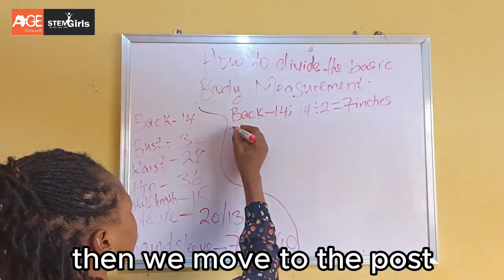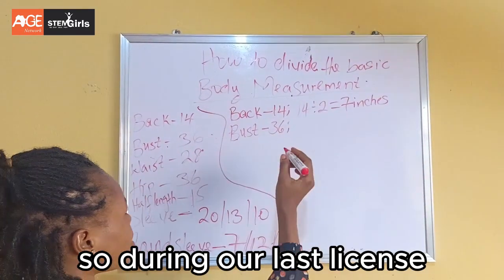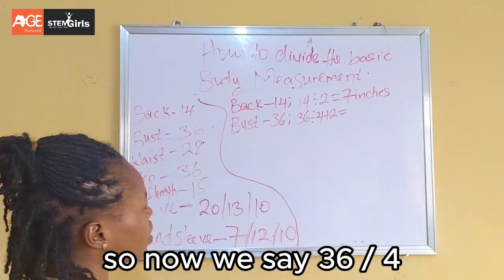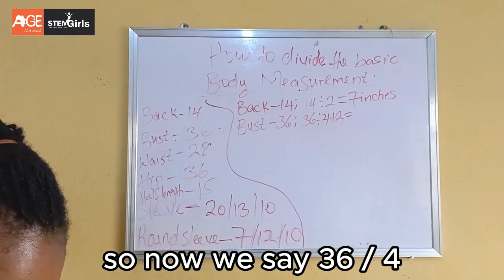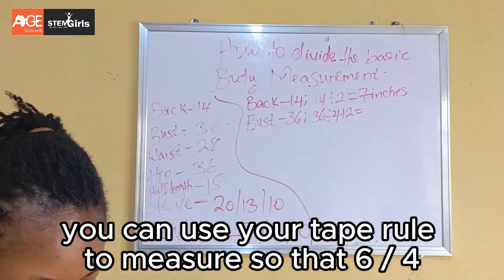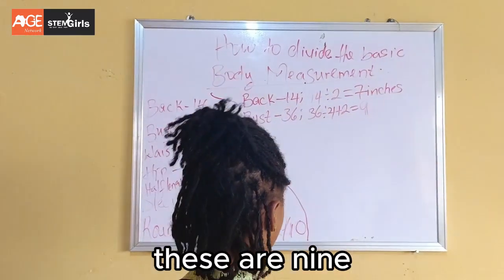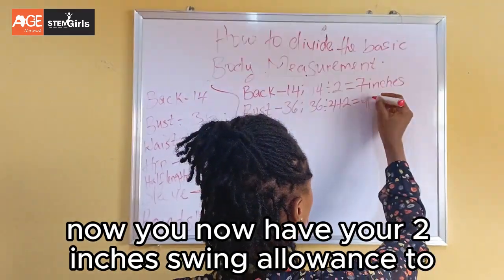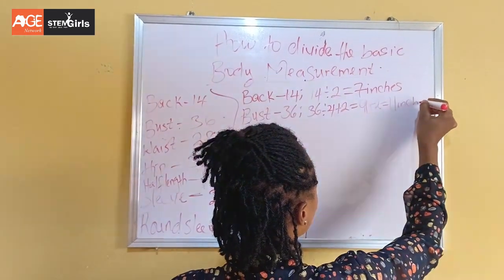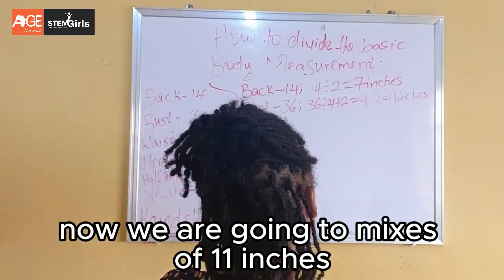Then we move to the bust. The calculation: we have 36, so 36 divided by 4 gives us 9. You can use your calculator or your tape measure. So 36 divided by 4 equals 9. Now you add 2 inches sewing allowance to get 11 inches. So on our fabric we will measure 11 inches for the bust.